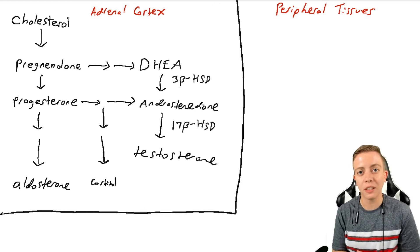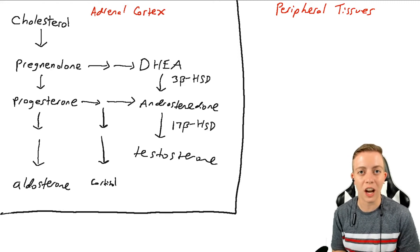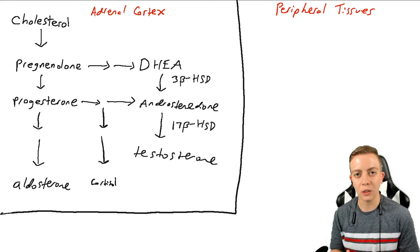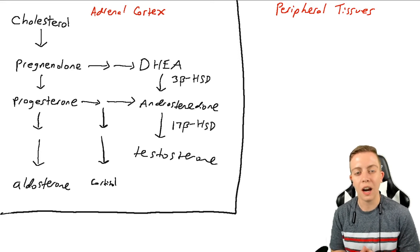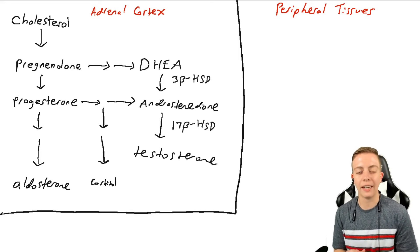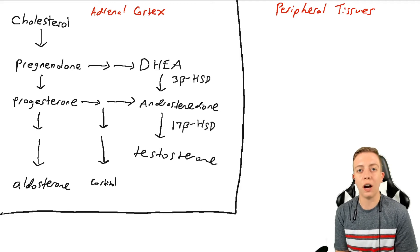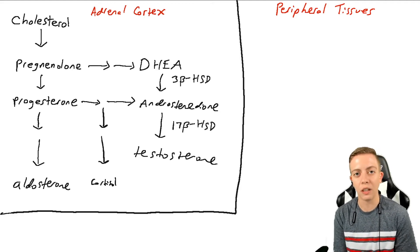Peripheral aromatization is the process of producing estrogen from androgens in the peripheral tissues, such as adipose tissue, blood vessels, bone, the brain, etc. All these tissues that have the necessary enzymes to make estrogen will do so after taking androgens from the adrenal cortex, so we are going to be talking a lot about the adrenal gland today as well.